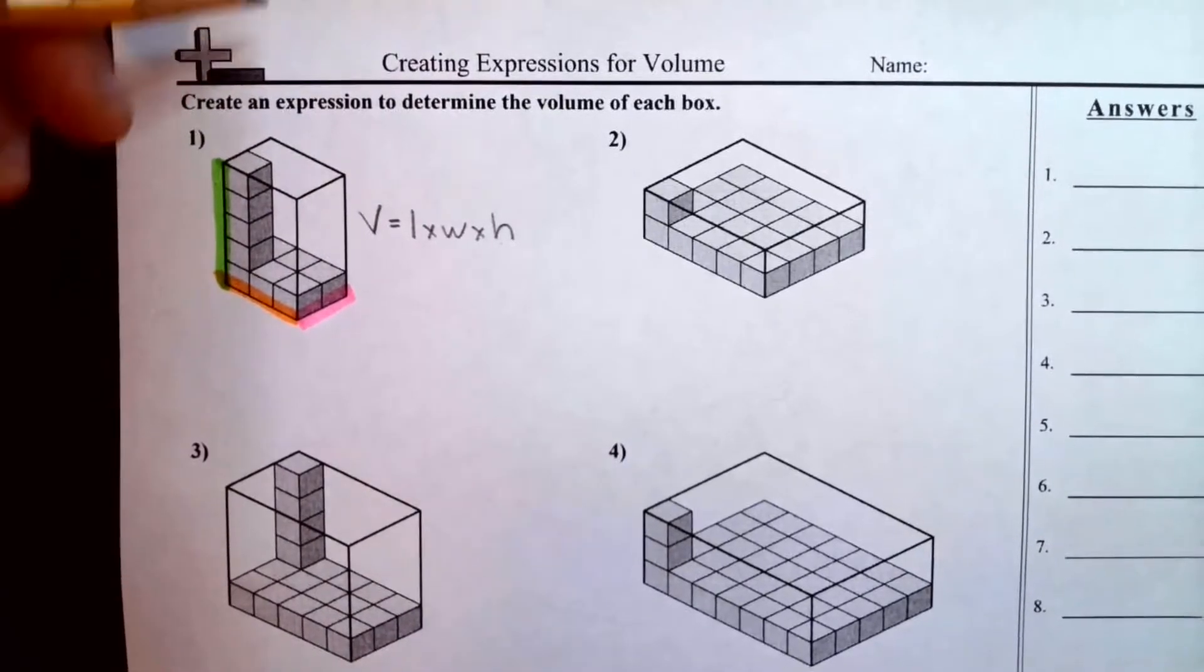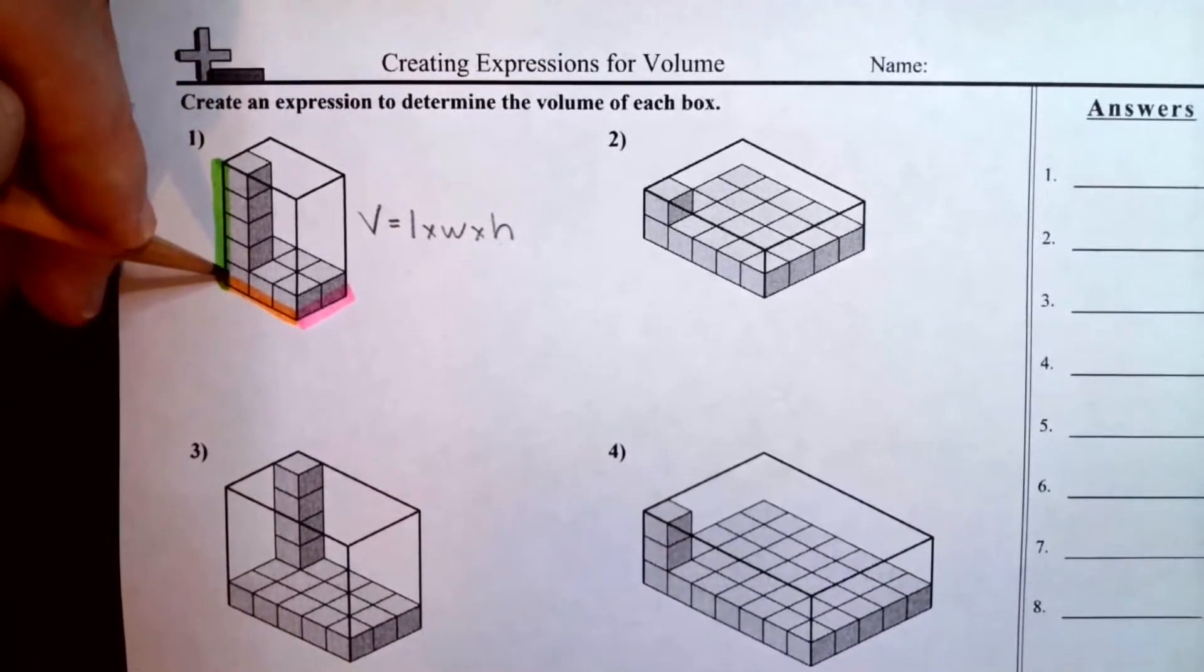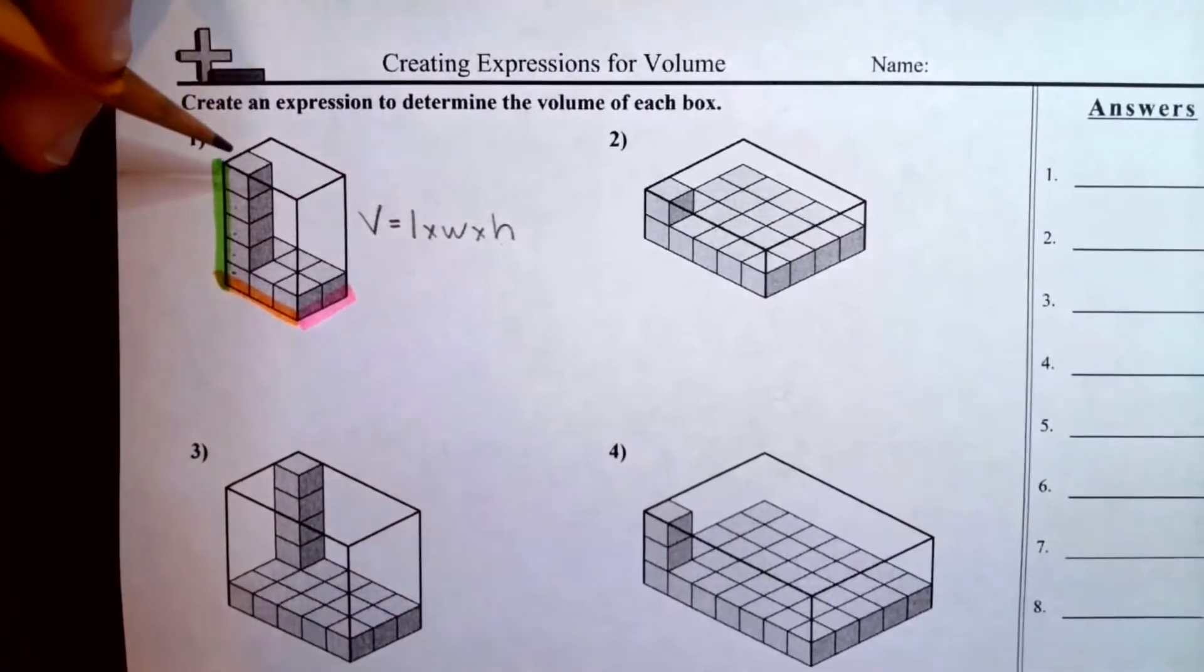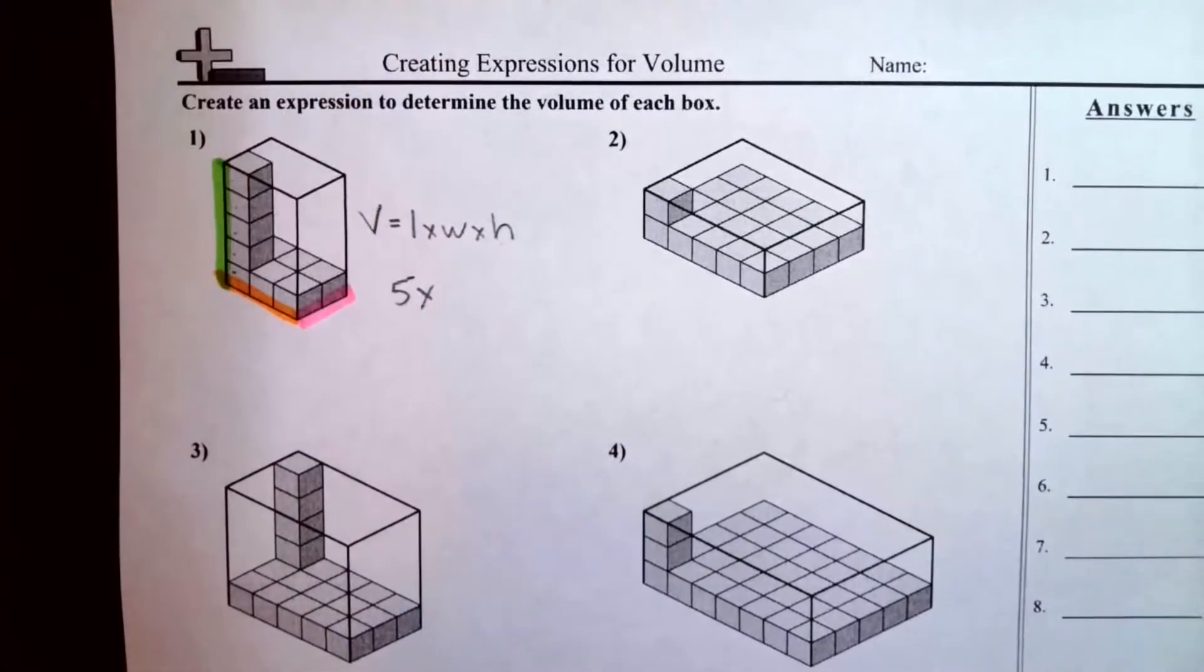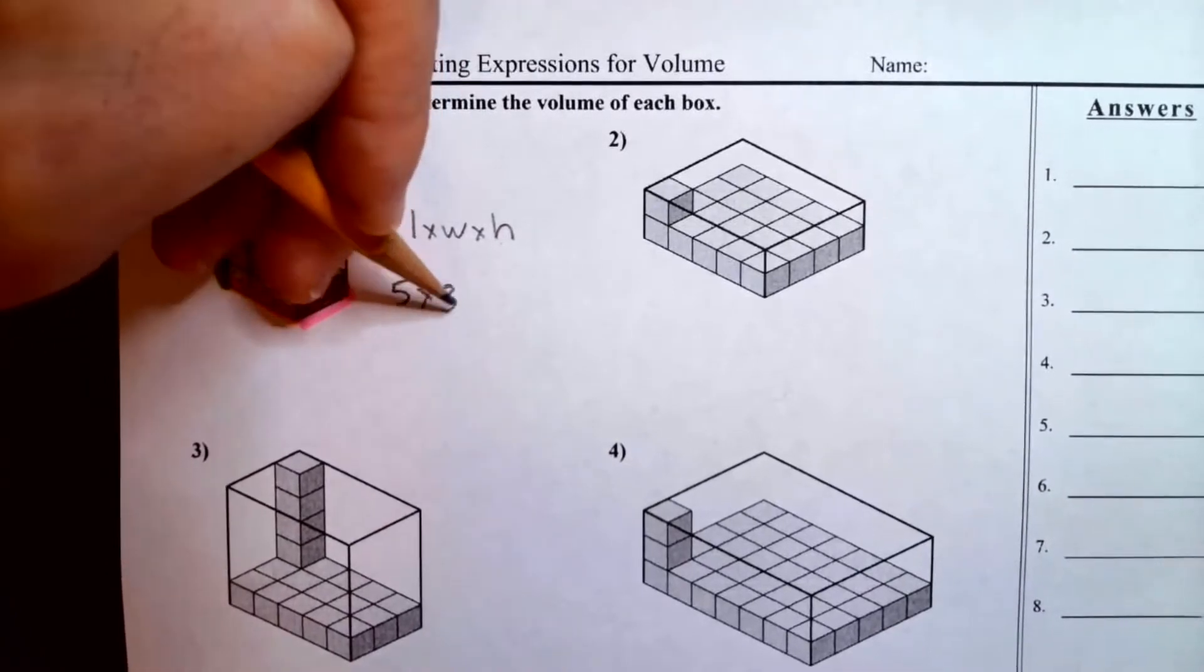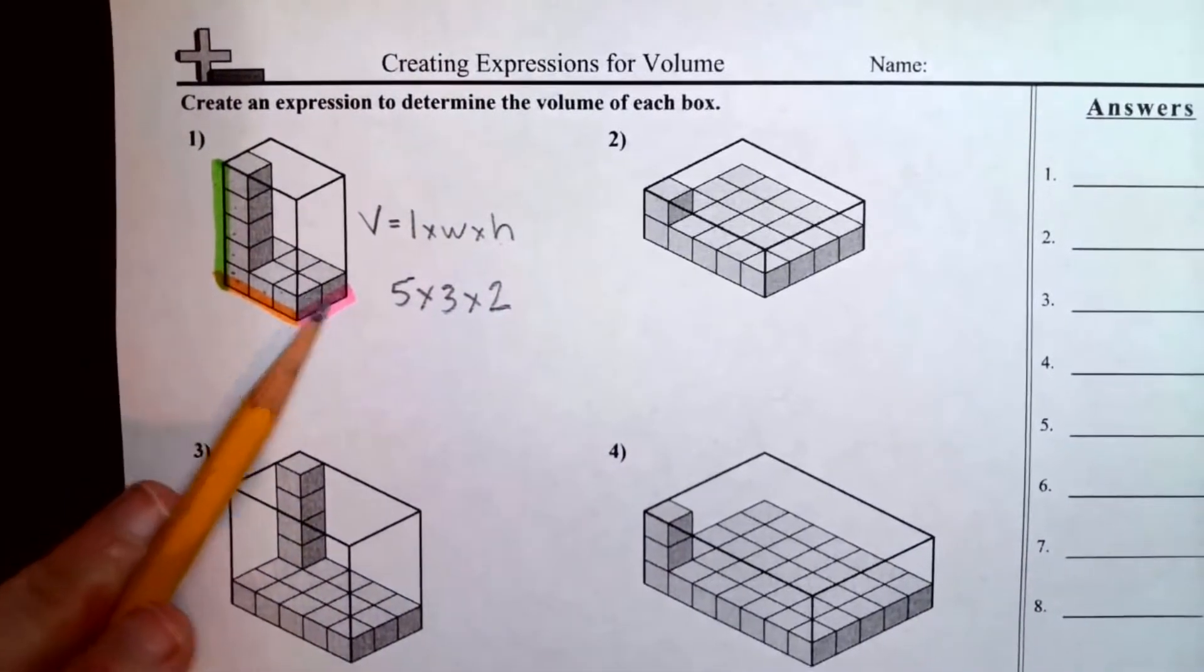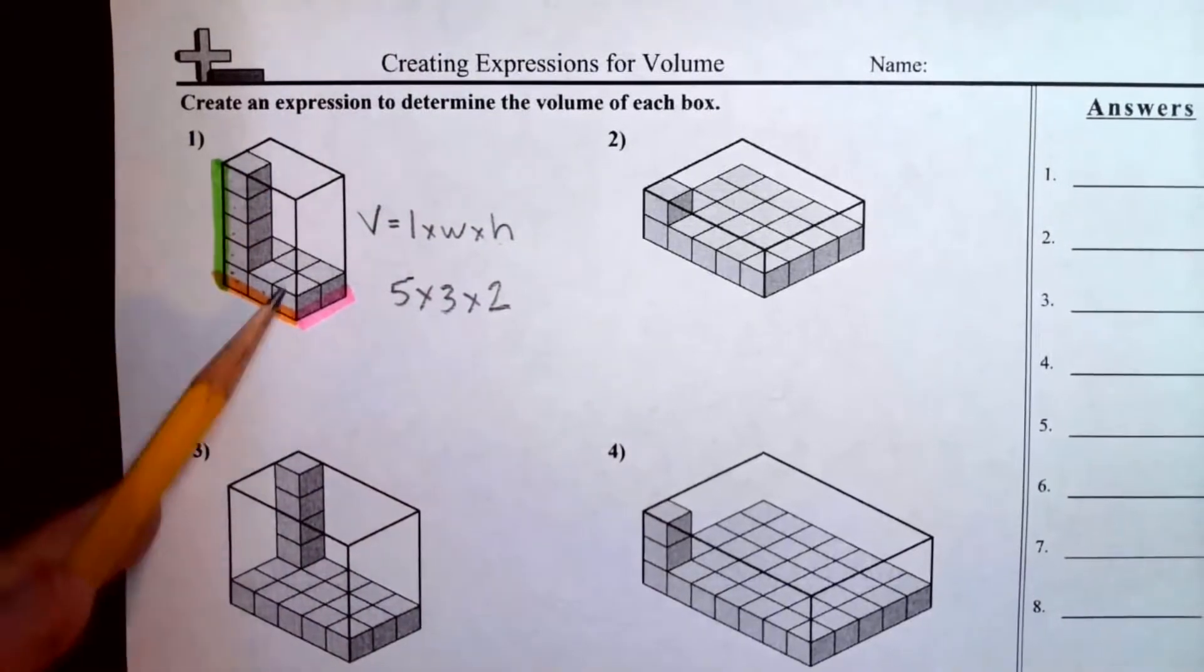So for this first one, one possible expression, if I count the cubes for the height I can count one, two, three, four, five. It has a height of five cubes. So five and then the length is one, two, three cubes. So five times three times two. That's one expression that if we actually solved it and evaluated it we would get the volume of the entire box.